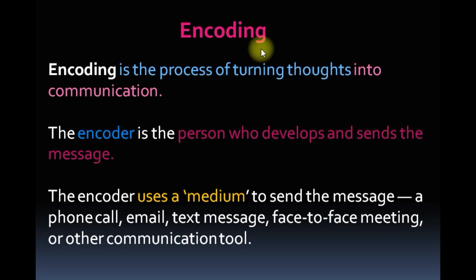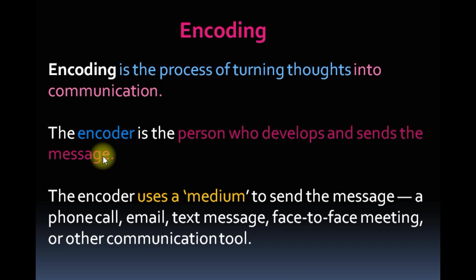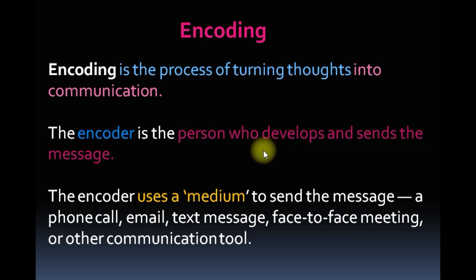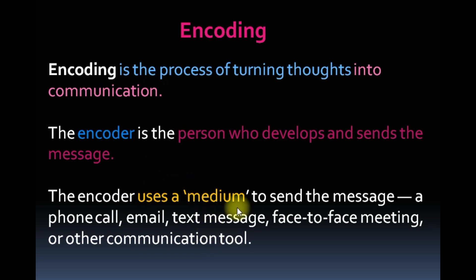Elements of communication: Encoding is the process of turning thoughts into communication. The encoder is the person who develops and sends the message. The encoder uses a medium to send the message — such as email, text message, face-to-face meeting, or any other communication tool.